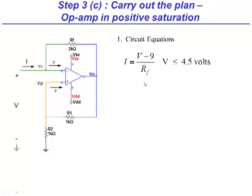And since Vp is one-half of Vout, which is 4.5 volts, and Vn equals V, we simply get the condition for positive saturation as V less than or equal to 4.5 volts.